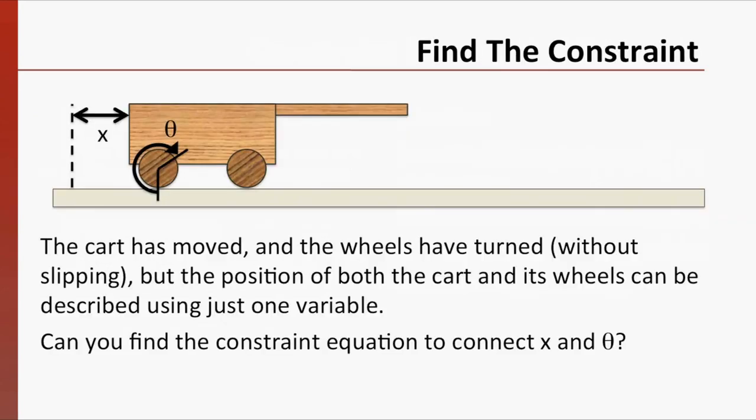Here's a situation where you can find the equation of constraint. A cart is being pulled across a flat surface, and the wheels turn without slipping. Effectively, the wheel is constrained to move only by rolling and not in any other way. No lifting up, no sliding, no peeling out.